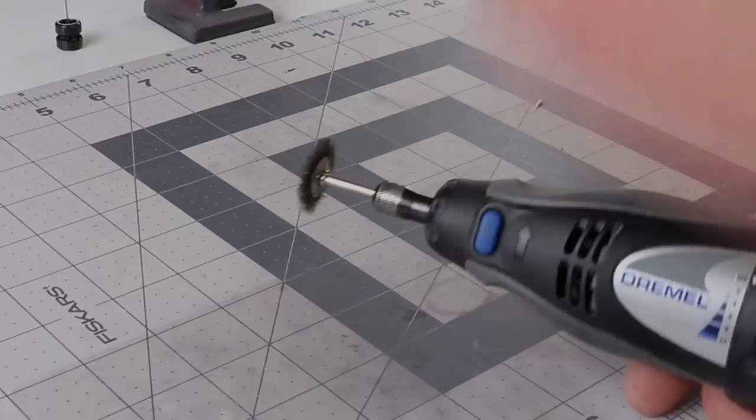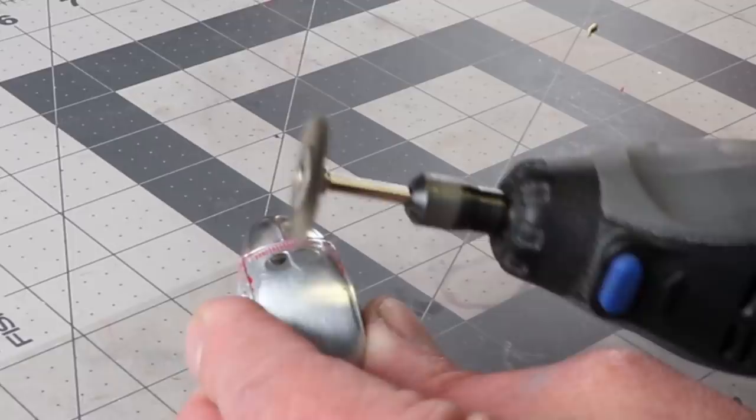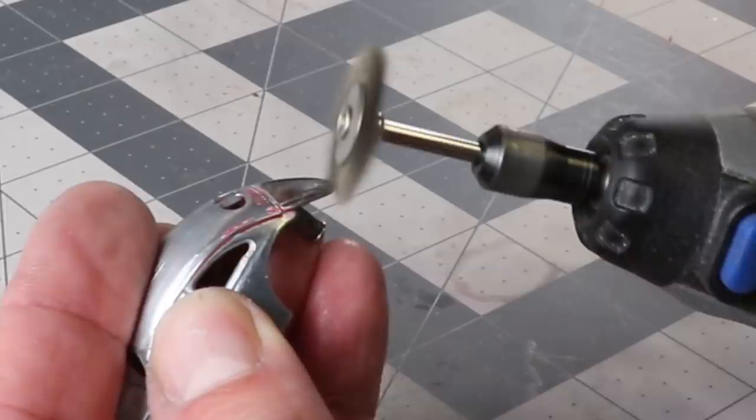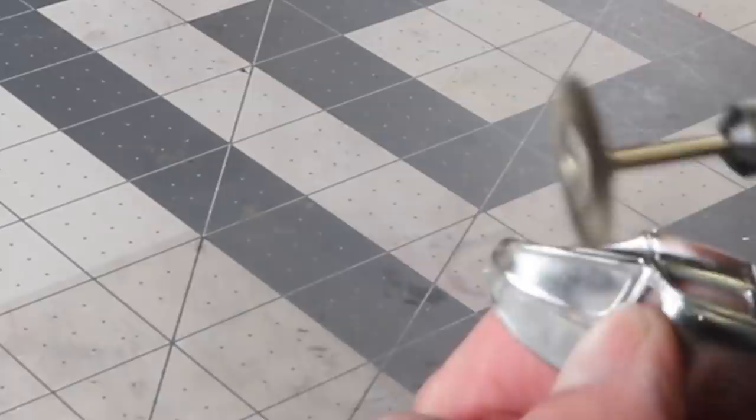There was some stuff that I needed to get off with the wire wheel on my Dremel tool. I was a little premature on taking this out, but normally I don't have a problem, and really this was just some flakes—it came right out, no problem.